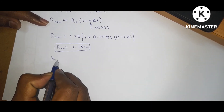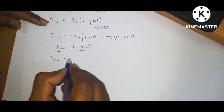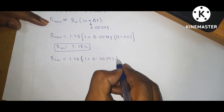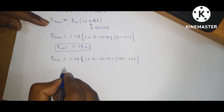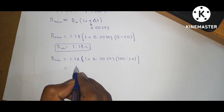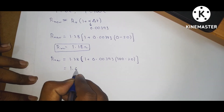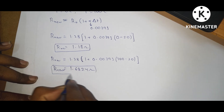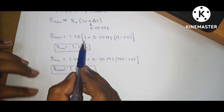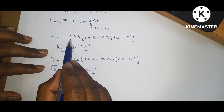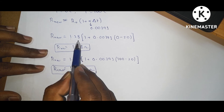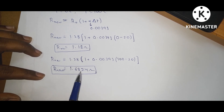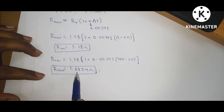At 100 degree centigrade: R_T is equal to 1.28 into 1 plus 0.00393 into (100 minus 20). Solving this gives R_T value of 1.6824 ohms. Observing the results: when temperature decreases from 20 to 0 degrees, resistance decreases from 1.28 to 1.18 ohms. When temperature increases to 100 degrees, resistance also increases from 1.28 to 1.68 ohms.